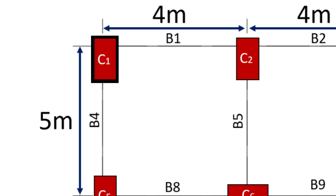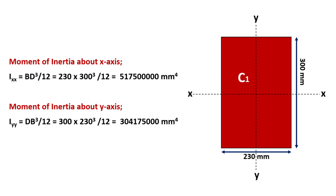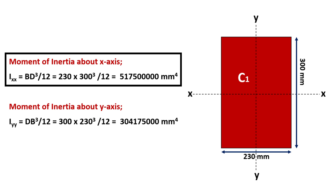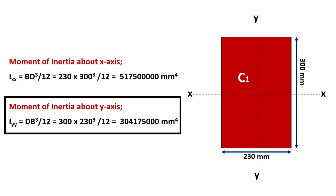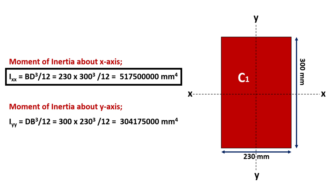The question now is which side of the column can resist maximum moment. For that, we need to identify which side has the greater moment of inertia. The greater the moment of inertia, the higher will be the moment resisting capacity. Let's calculate the moment of inertia about X and Y axes of the column. The moment of inertia about the X axis will be given by B·D³/12, where B is 230 mm and D is 300 mm. Again, the moment of inertia about the Y axis will be D·B³/12, where D is 300 mm and B is 230 mm. It's clear that the moment of inertia about the X axis is greater than the moment of inertia about the Y axis, which implies that the major axis of bending will be the X axis.